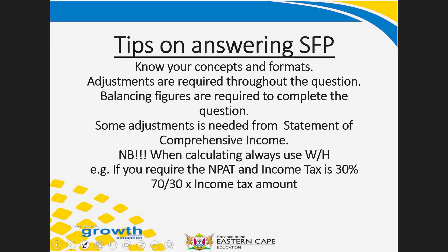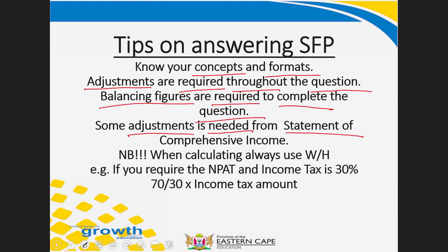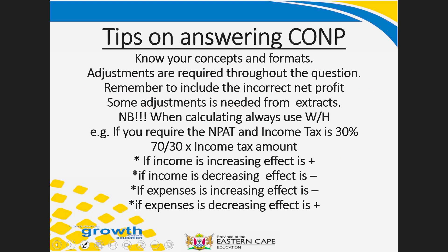Moving on to the statement of financial position — the second financial statement in Question 1 — again know your concepts: know what an asset is, know the different types of assets, whether non-current or current, and know the format. Adjustments will be required throughout the question. Balancing figures are also required to complete the question. Some adjustments carry over from the statement of comprehensive income — whatever figure you calculated there, you transfer it directly to the statement of financial position. You use the same 'what you want, what you have' method to get the figures you need.